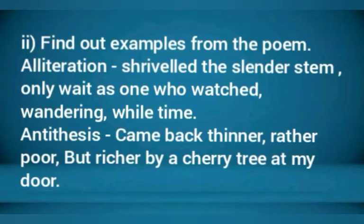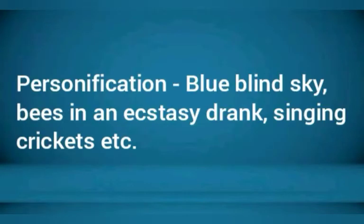Now we find examples of poetic devices from the poem. For alliteration: 'Shriveled the slender stem' — the consonant sound S is repeated; and 'Only wait as one who watched, wandering while time' — the consonant sound W is repeated more than two times. For antithesis: 'Came back thinner, rather poor, but richer by a cherry tree at my door' — the opposites poor and richer are placed in the same sentence. For personification: 'blue blind sky,' 'bees in ecstasy drank,' and 'singing crickets' — inanimate objects and insects have been given attributes of humans, like being blind, having happiness, or singing.